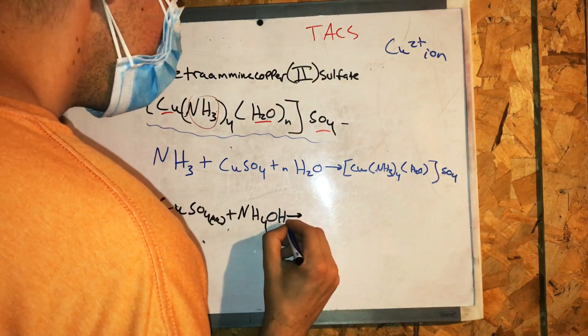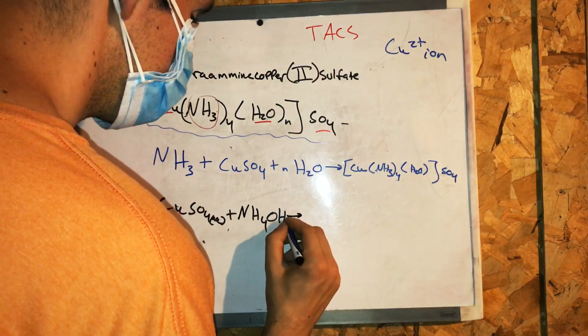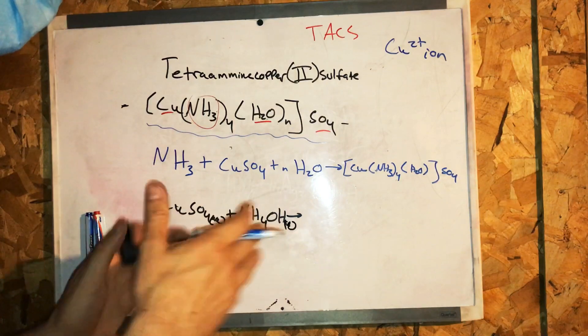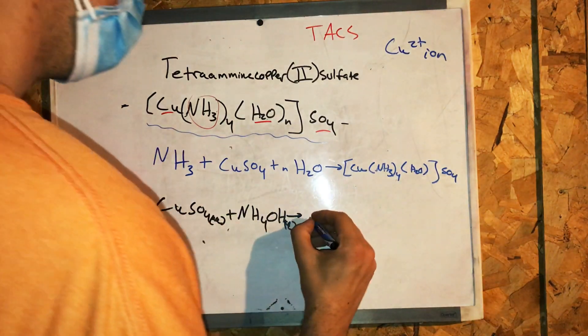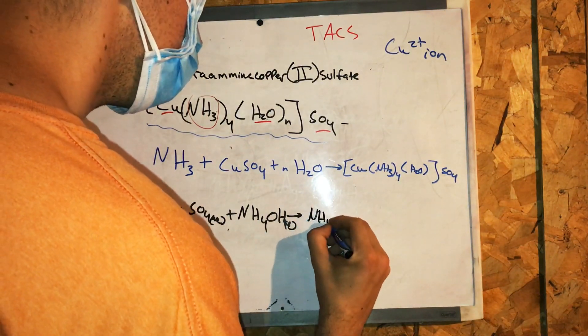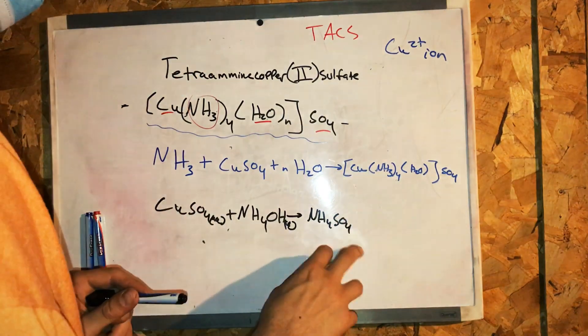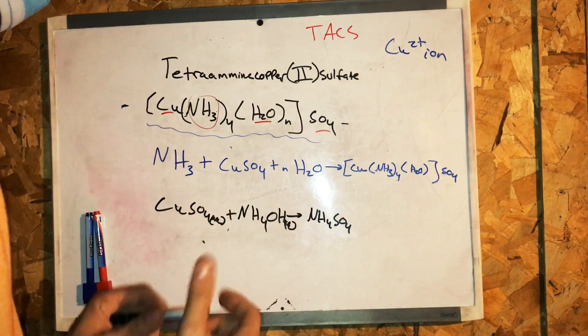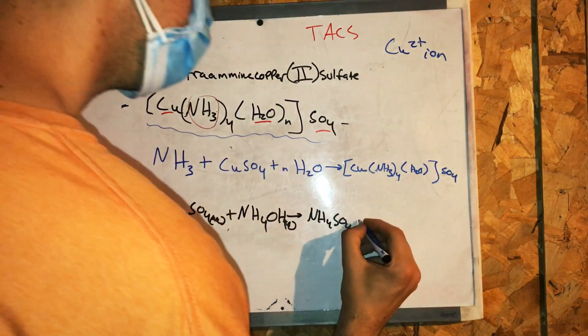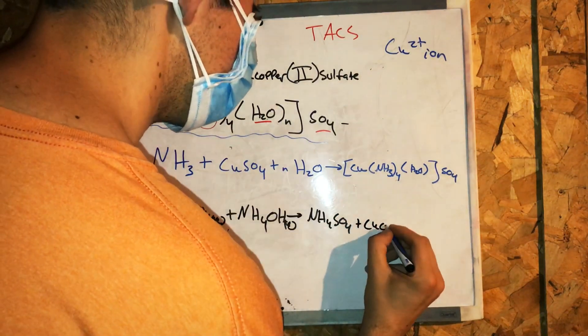Which is going to yield, this is all aqueous here on the left side, it's going to yield NH4SO4. This is ammonium sulfate, plus copper hydroxide.